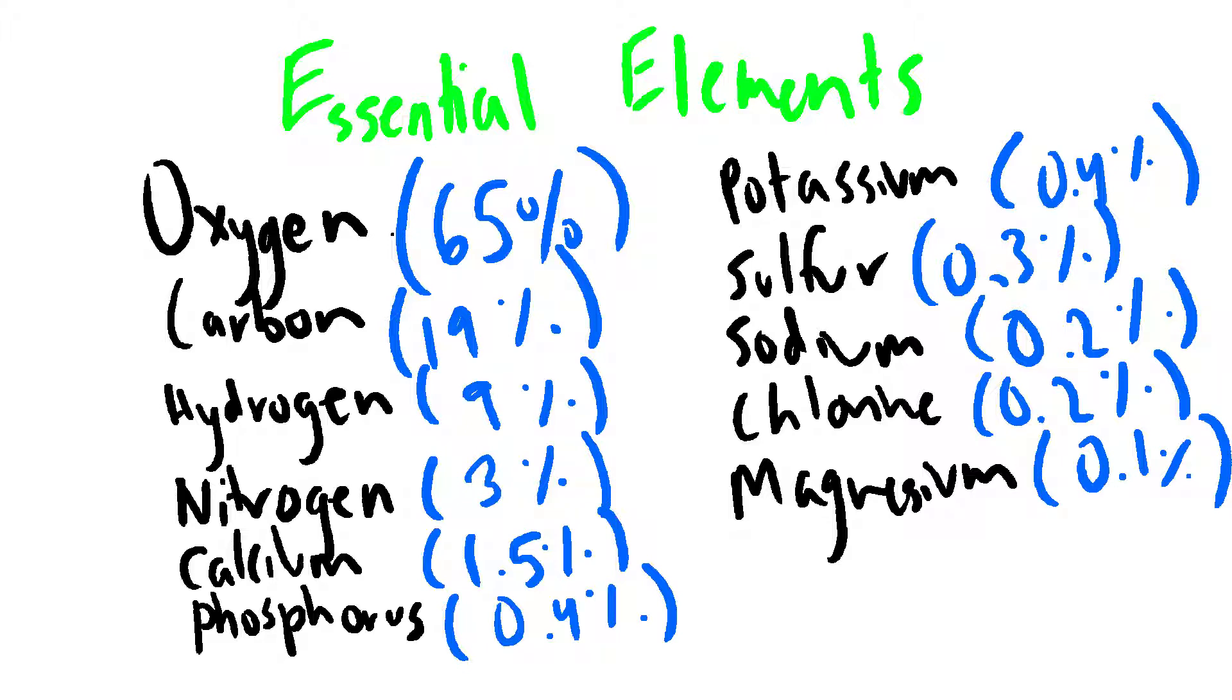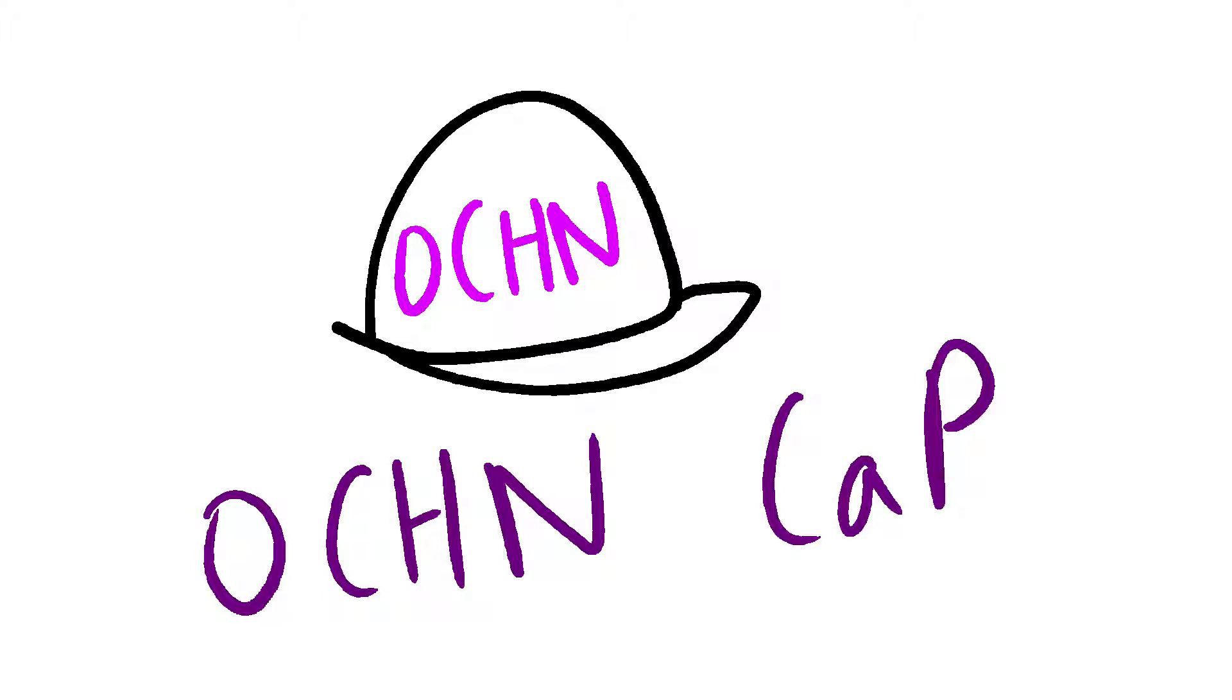To remember the six most common ones in order of percentage of body mass, think of the OCHNA CAP. Oxygen has the highest percentage followed by carbon, hydrogen, nitrogen, calcium, and phosphorus.